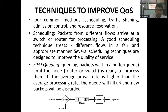First, we will discuss scheduling. This technique schedules the arrival of packets from different flows so that packets can be processed in an appropriate manner by the router or switch. There are different types of scheduling techniques to improve QoS. One is FIFO — first in, first out. A queue is maintained by a router or switch in which packets wait for their turn to be processed. Each incoming packet is appended to the queue; the packet which enters first is processed first. If the queue is full, new packets are discarded until there is free space.